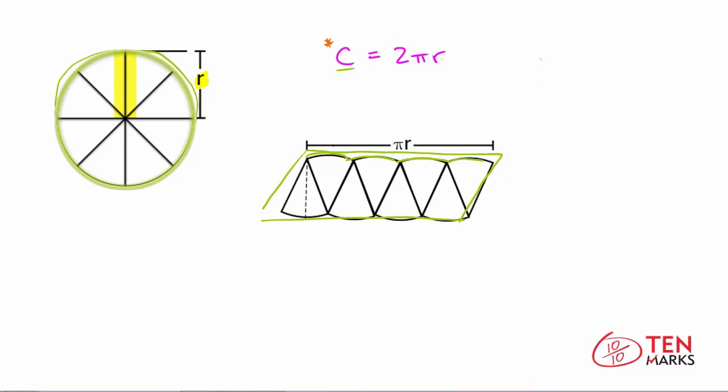Now the area of a parallelogram is area equals length times width. So the length here ends up being πr. This happens because we know that the outer edge of these wedges is the circumference. One half of the circumference makes up the top of the parallelogram, and one half makes up the bottom.